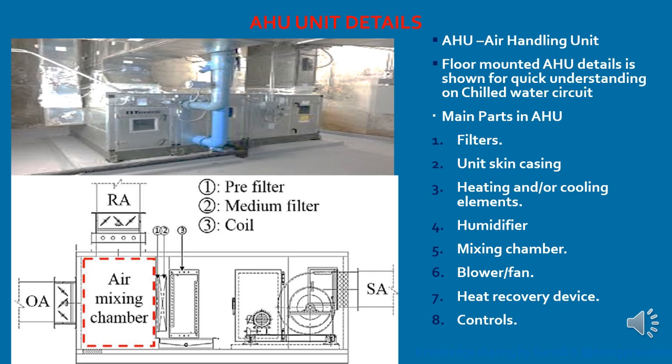What are the parts in the AHU? A filter will be there, which is used to filter the air before it enters the AHU. There is the unit skin casing — the outer body of the AHU is called the unit skin casing. Heating and cooling elements: if you refer to the general arrangement drawing, number three coil is the cooling or heating element.